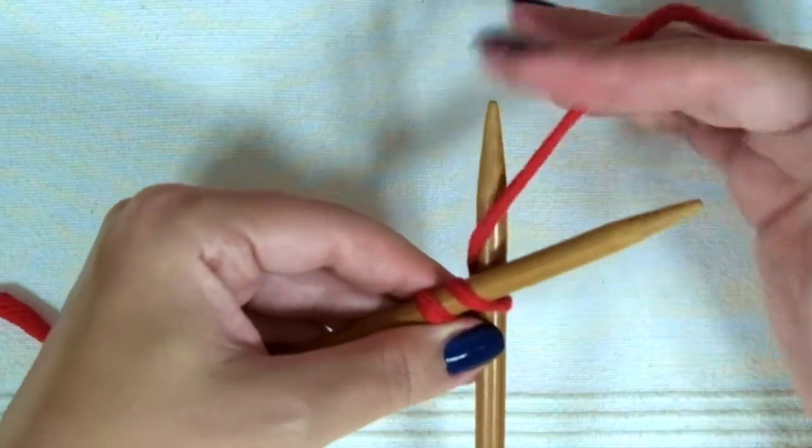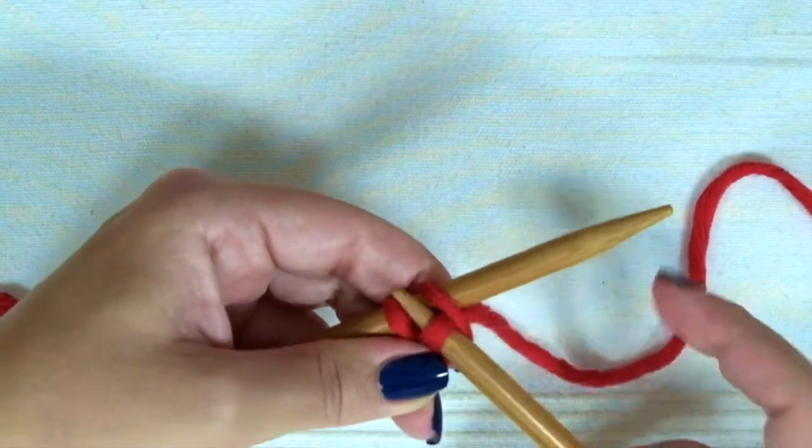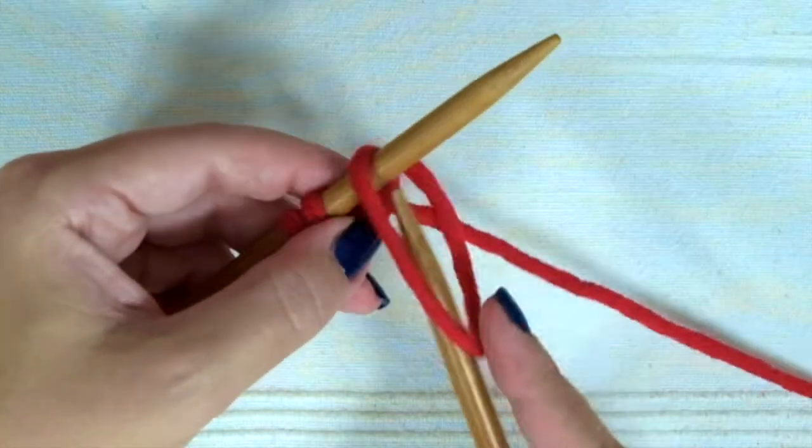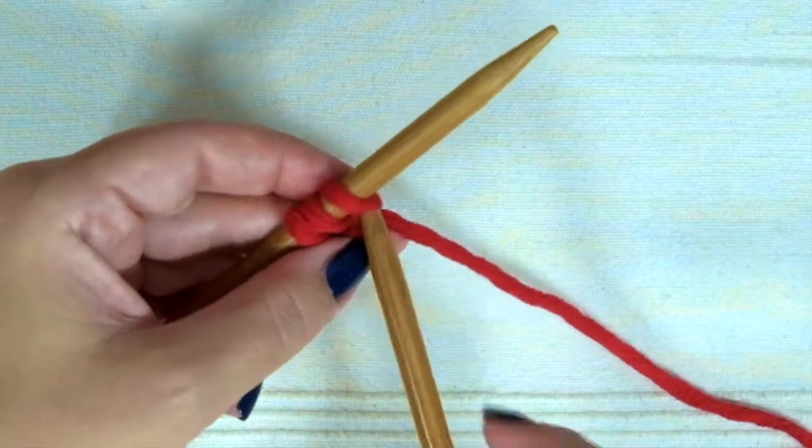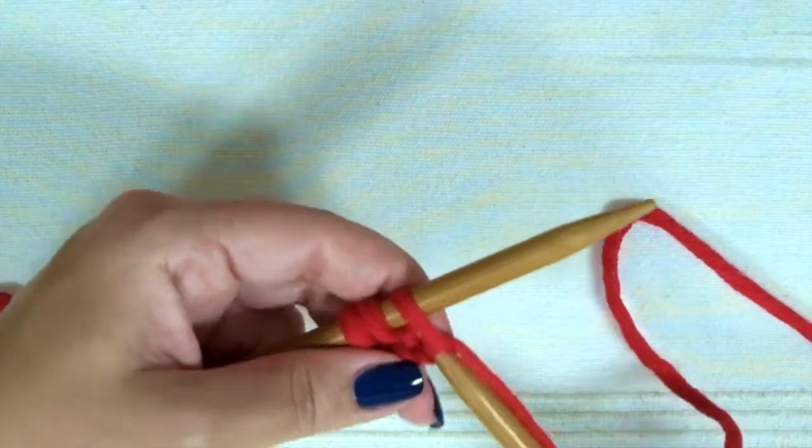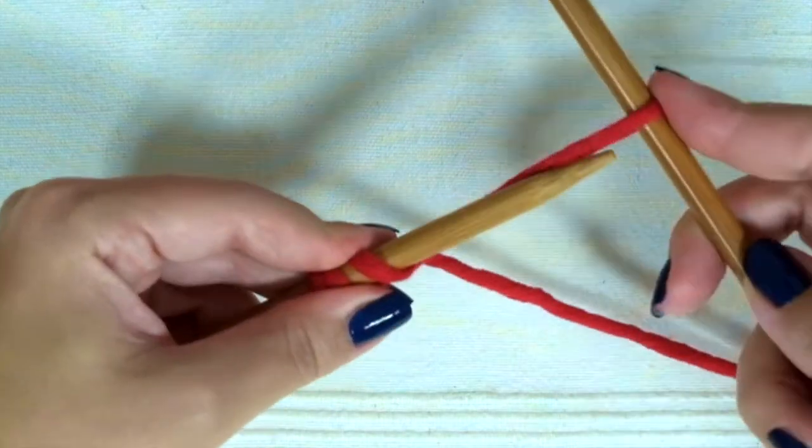Put the needle through the second stitch, wrap the yarn around the right needle, and pull it through this stitch. Twist it and put your third stitch onto the left needle, and continue doing so until you have the number of stitches you want.